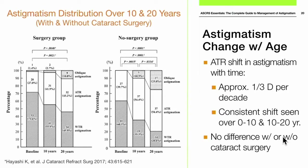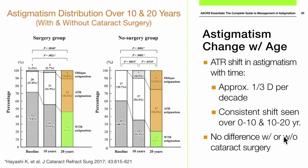Regarding age: Hayashi's work has shown an against-the-rule shift in astigmatism over time. This is seen both in eyes that have had cataract surgery and those that haven't. From baseline to 10 years to 20 years, there's a steady change of about a third of a diopter per decade — consistent from 0 to 10 as well as 10 to 20 years, with no difference based on whether cataract surgery was performed.